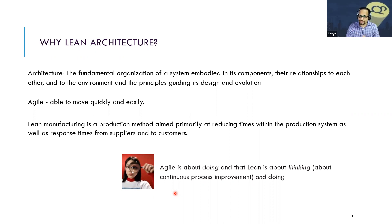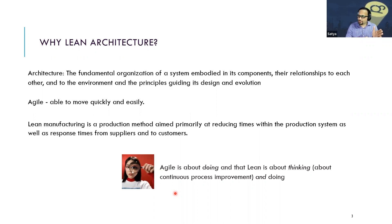On one hand we have architecture that talks about integrating multiple components; on the other hand, agile talks about how to react quickly and make changes. Then comes a third concept - lean or lean manufacturing - primarily created by Toyota in the Toyota Production System. It's a method aimed at reducing the time within production systems, going from point A to point B faster. If I summarize: agile is about doing, lean is about thinking and continuously doing. They are really not that different.